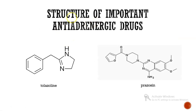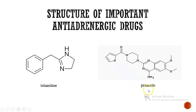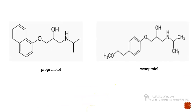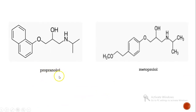Next is the structure of important anti-adrenergic drugs. The examples shown are tolazoline, prazosin, propranolol, and metoprolol, with their respective chemical structures. Thank you.